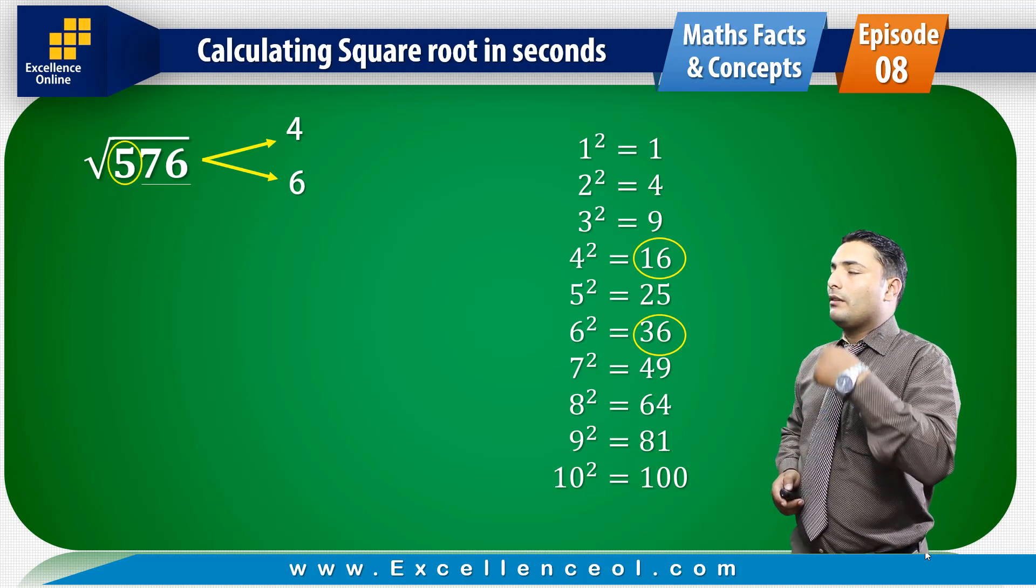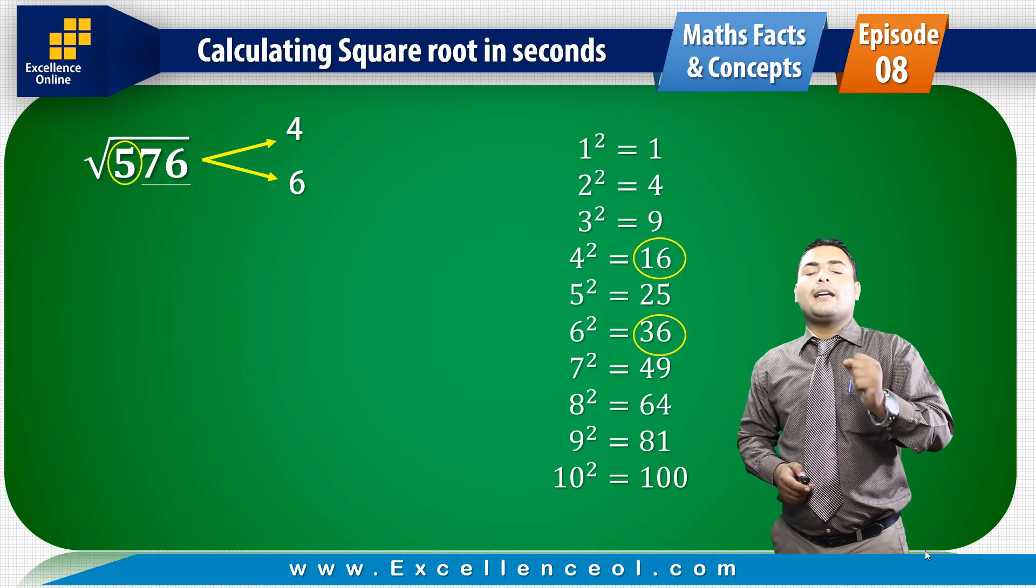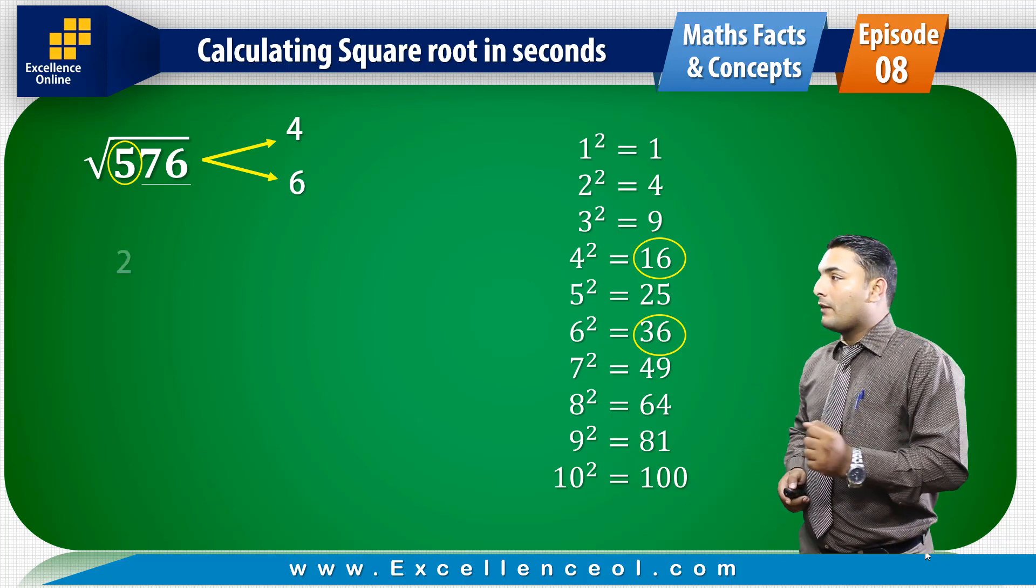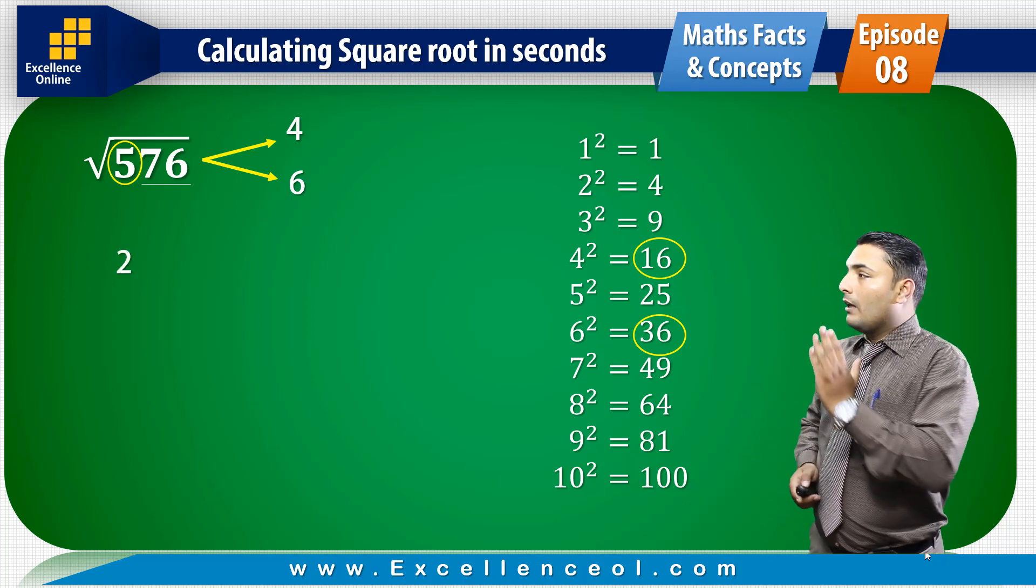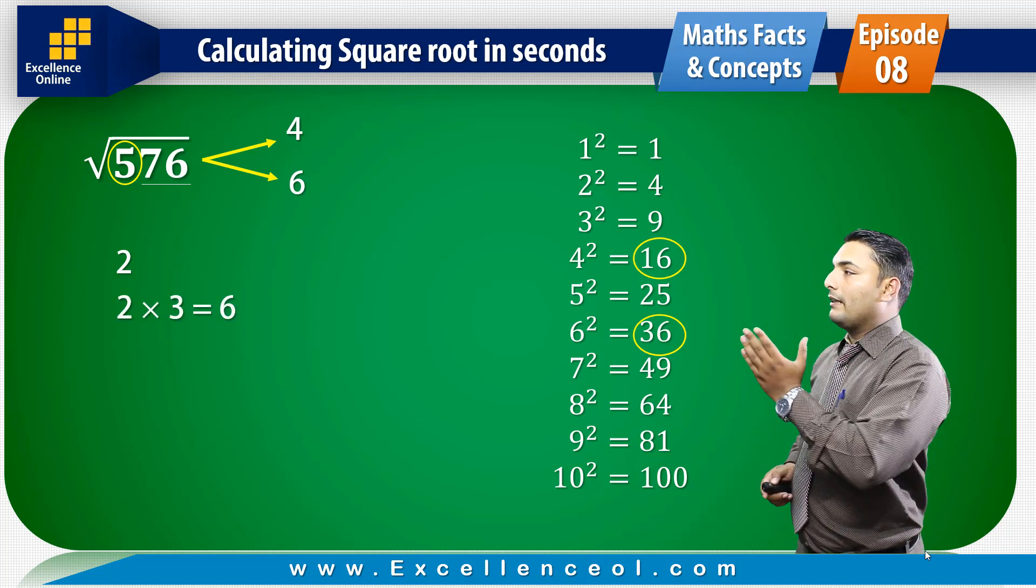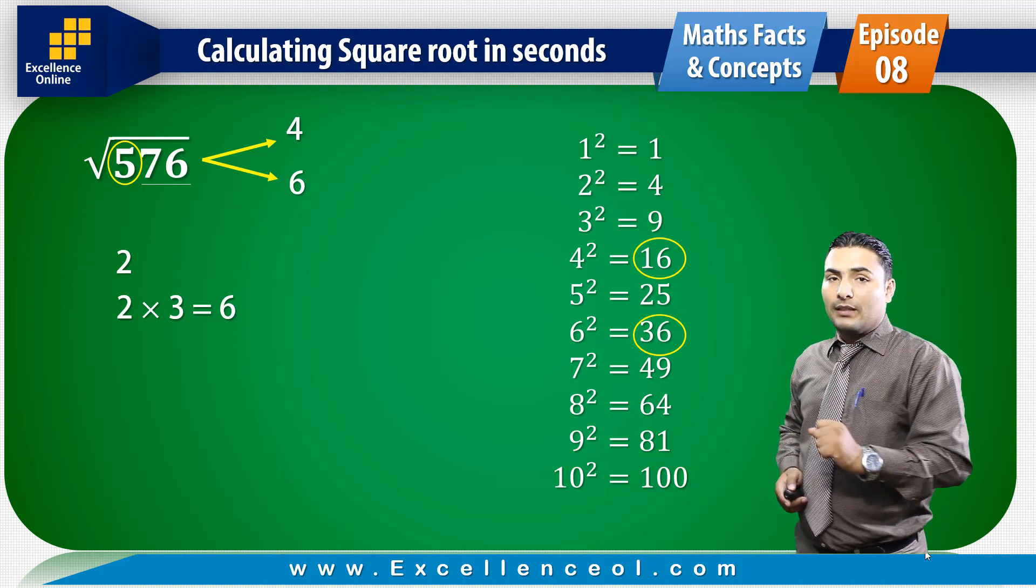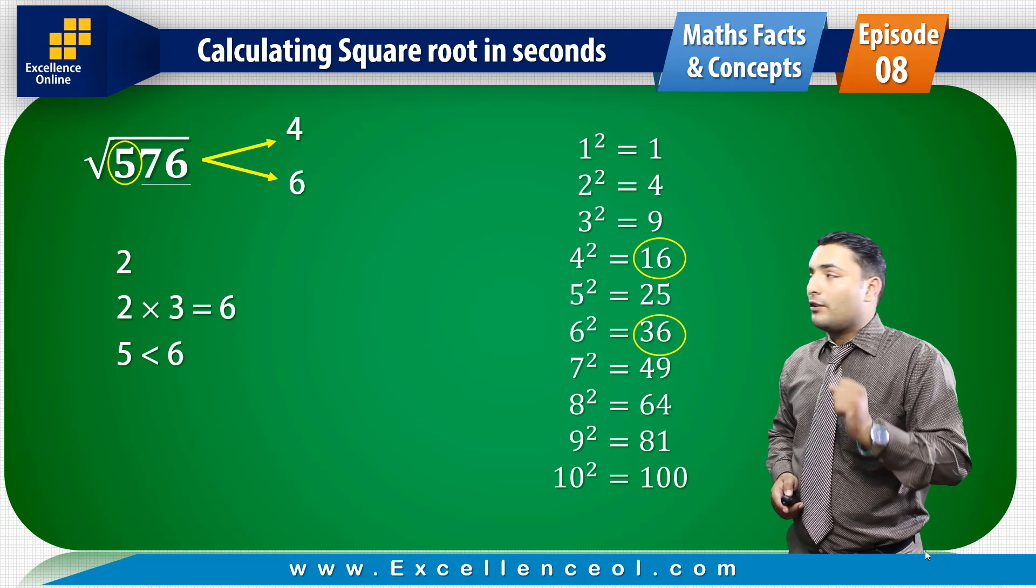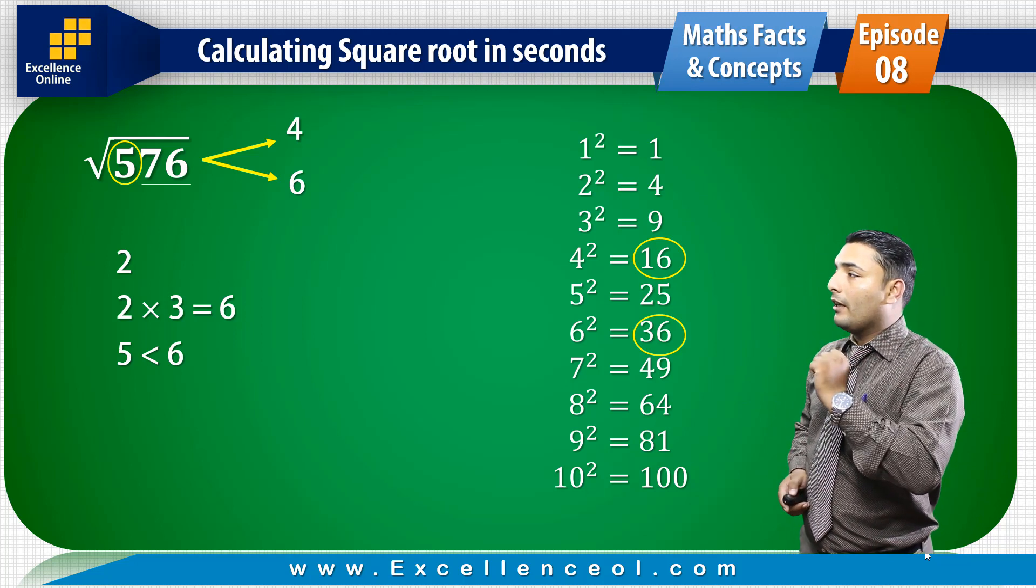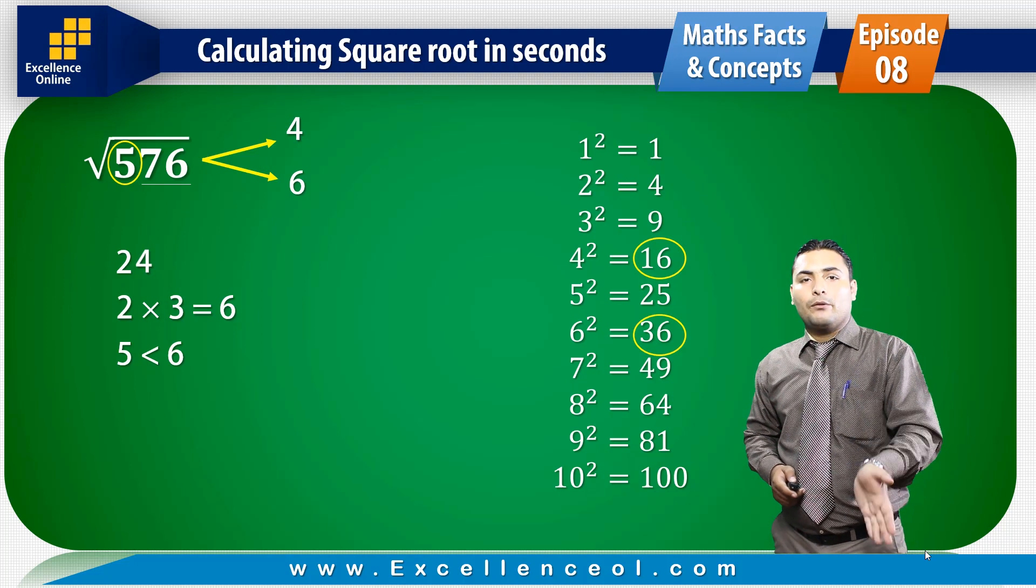The remaining number is 5. We have to see which square is less than it. 5 is less than 4, which is 2 squared, so we have written 2. Now the next number is 3, multiply it by 2 to get 6. The original number is 5, which is smaller. We will take 4, so the answer is 24.